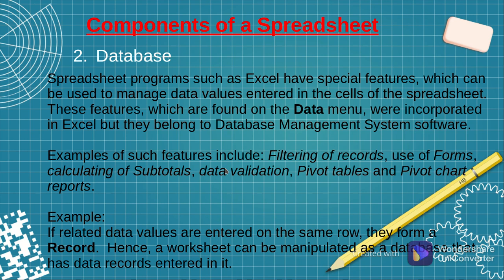The second component of a spreadsheet is the database component. We mentioned that application software can be divided into categories such as word processors, spreadsheets, databases, graphics software, and so on. In spreadsheets, we have components of databases that have been incorporated inside spreadsheets — tools that we normally use in spreadsheets but traditionally belong to databases. Examples include things like filtering, using forms, validating data, calculating subtotals and grand totals, and so forth. These features, borrowed from databases and incorporated in spreadsheets, form the database component of a spreadsheet.